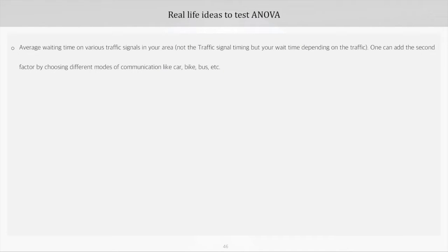First is a scene we all go through on a daily basis. While on the road, we all have to wait at one or the other traffic signal. So the average waiting time on various traffic signals in your area can be the response factor — not the traffic signal timing, but our waiting time depending on the traffic. This can be used for one-way ANOVA.